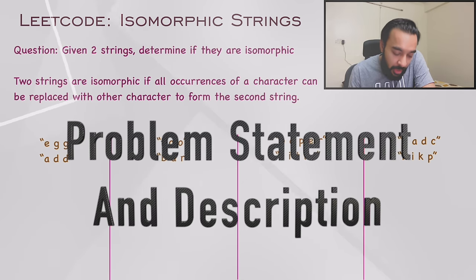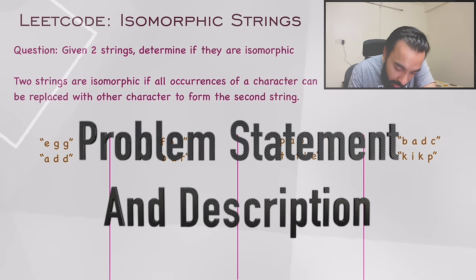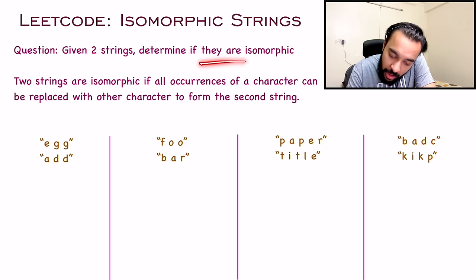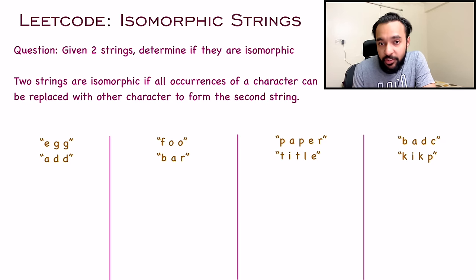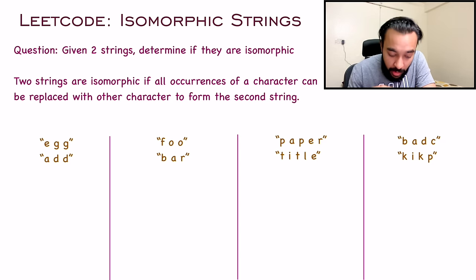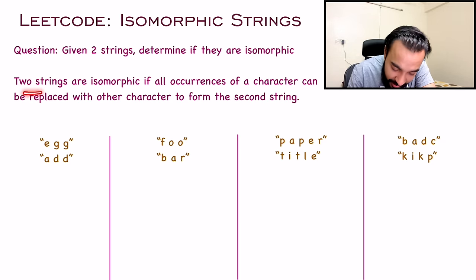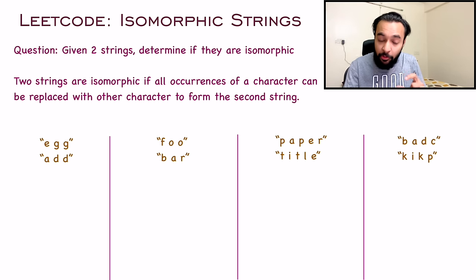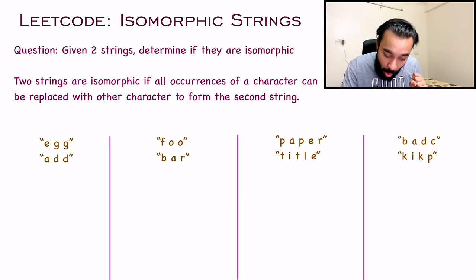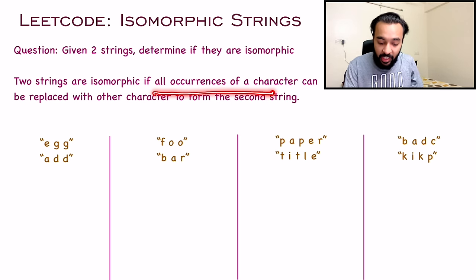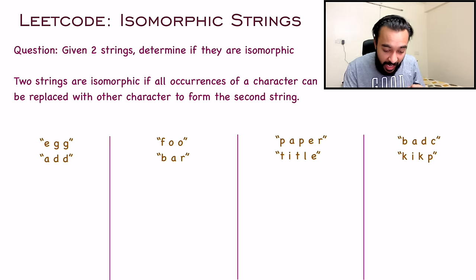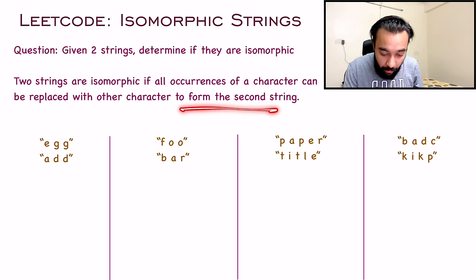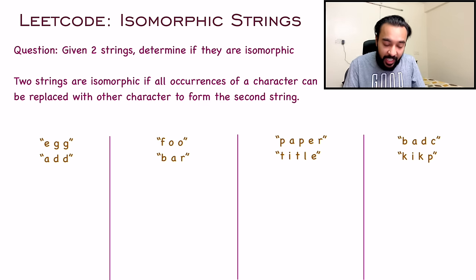Going over the problem statement: you are given two strings and you have to determine if they are isomorphic. Two strings are said to be isomorphic if you can replace all occurrences of a character with some other character and form the second string. Let us understand it better using some sample test cases.